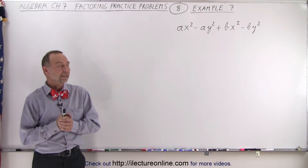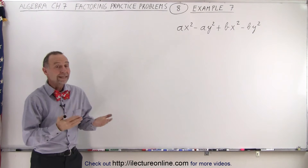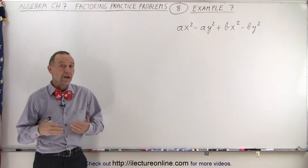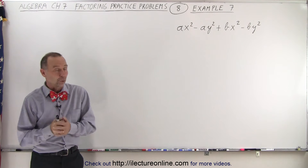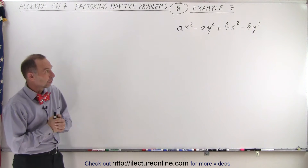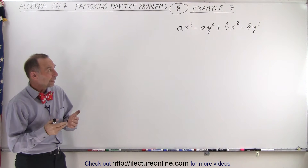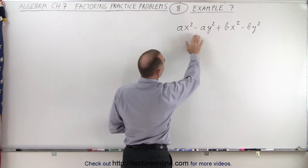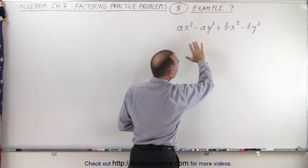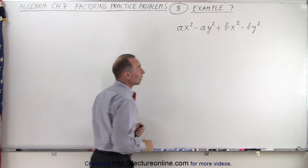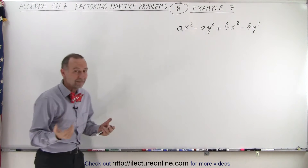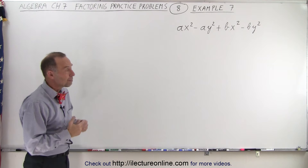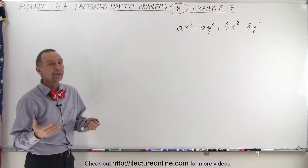Welcome to our lecture online. With our next example, we're starting out with a polynomial of four terms. Typically, if we cannot factor a common factor — in this case, none of the four terms have a single common factor — we might start out by grouping.